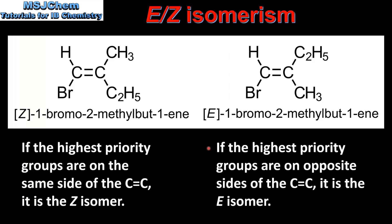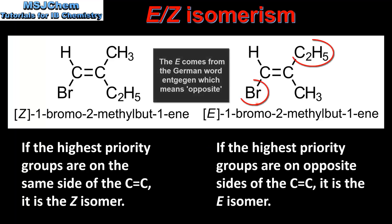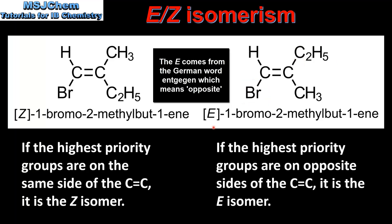If the highest priority groups are on opposite sides of the carbon-to-carbon double bond, it is the E isomer. In this molecule we can see that the bromine atom and the C₂H₅ group are on opposite sides of the carbon-to-carbon double bond. Therefore it is the E isomer, and the full name of this molecule is E-1-bromo-2-methyl-but-1-ene.